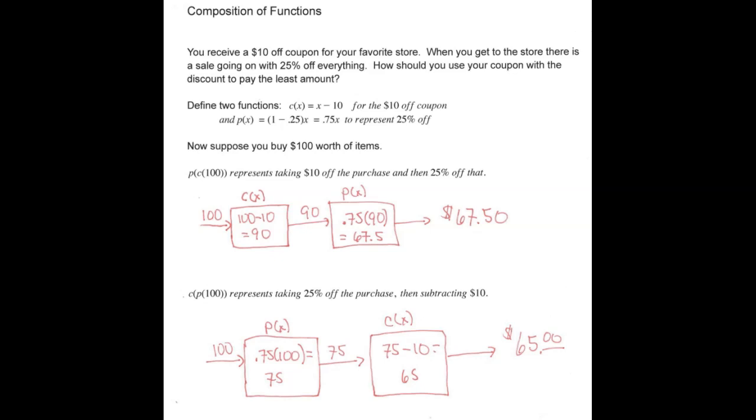Let's do an example using composition of functions for a real life problem. Suppose you receive a $10 off coupon for your favorite store. And when you get to the store, there's a sale going on where everything is 25% off. How should you use your coupon with the discount in order to pay the least amount of money?